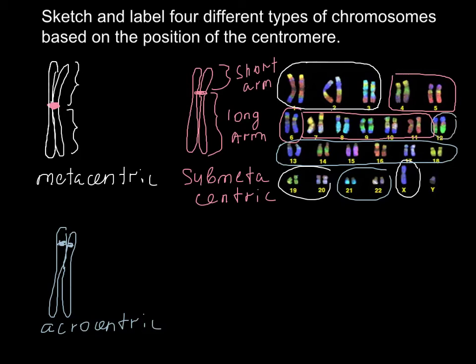These are the three types of chromosomes that can be found in the human genome. The fourth type is called telocentric, and it is not present in the human karyotype but can be found in the plant kingdom and in some animals, for example mice. The centromere is at the very end of the chromosome, so the two sister chromatids are connected at the ends — this is called telocentric.